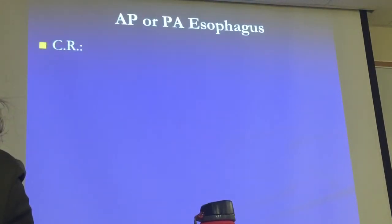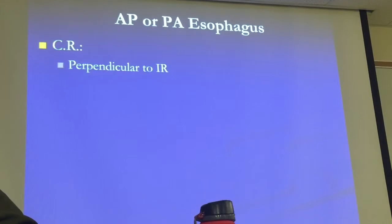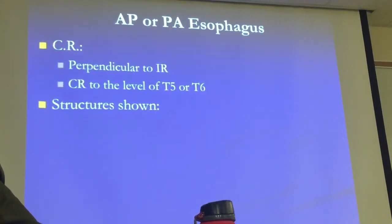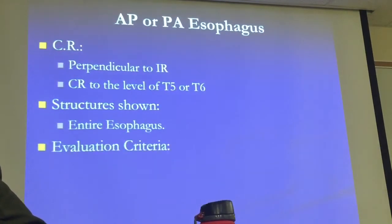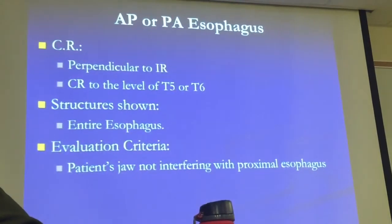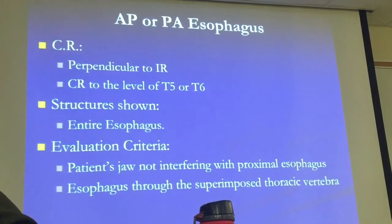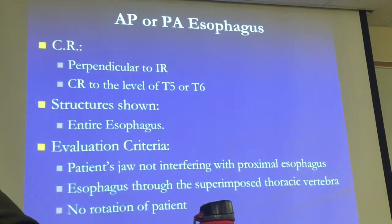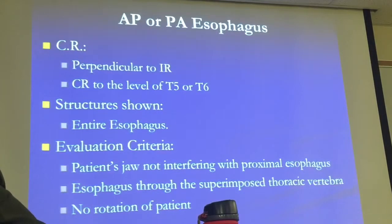Central ray perpendicular to the image receptor at the level of T5 to T6 — and mid-sagittal plane. The structures shown: the entire esophagus filled with barium. Evaluation criteria: patient's jaw not interfering with the proximal esophagus — that's why you bring the jaw out. The esophagus is seen through the superimposed thoracic vertebrae. And the last thing: no rotation.